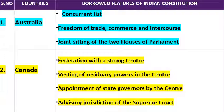समवर्ती सूची वो होती है जिस पर दोनों मिलकर laws बनाते हैं। State List पर केवल state law बना सकती है, Union List पर सिर्फ Union law बना सकती है। Concurrent List में जो भी subjects दिए हैं, उस पर संघ और राज्य दोनों law बना सकते हैं। Next आता है Freedom of Trade and Commerce — Article 301 में। और Joint Sitting of Two Houses of Parliament, यानि संयुक्त बैठक — Article 108 में — वो भी Australia के constitution से borrow की गई है।